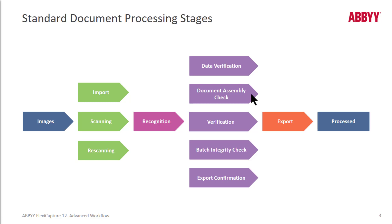The Batch Integrity Check stage is a stage that requires scripting. You can use the document set capability to do some of what you can do with Batch Integrity Check scripts. Export confirmations are a way to check your data before export. In some cases, you can lock down field formats and data checks to make sure your data is good without relying on a human doing this last export confirmation step.